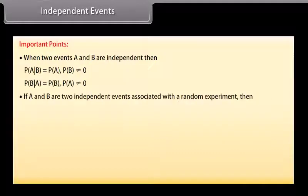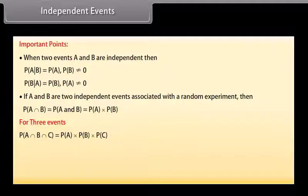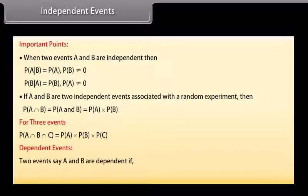If A and B are two independent events associated with a random experiment, then P(A∩B) = P(A) · P(B). For three events: P(A∩B∩C) = P(A) · P(B) · P(C). Dependent event: Two events A and B are dependent if P(A∩B) ≠ P(A) · P(B).